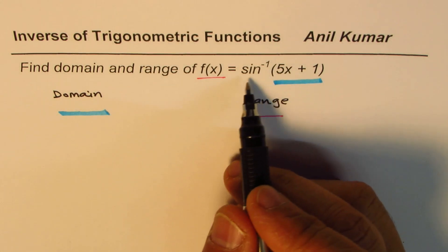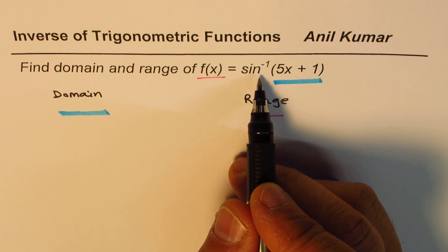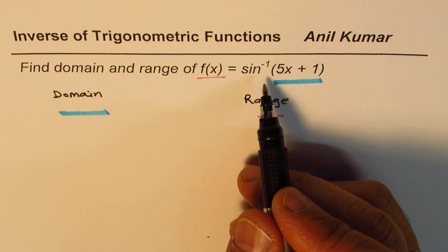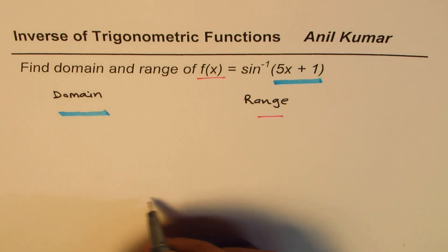Now, for inverse functions, these inverse functions are only defined in the interval minus pi by 2 to plus pi by 2. Inverse functions are only defined for sine. Let me just sketch this graph for sine function here to explain you the idea.